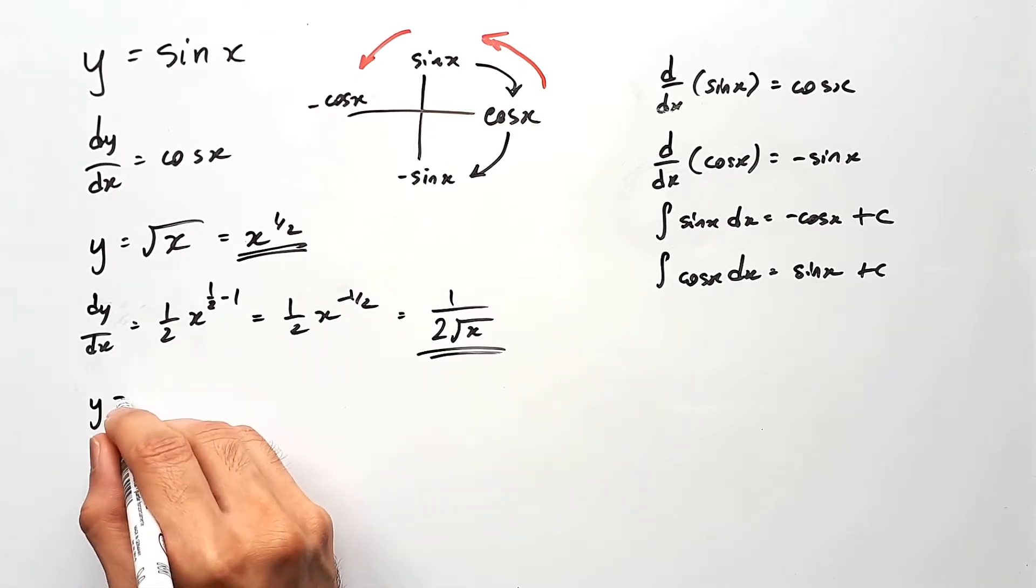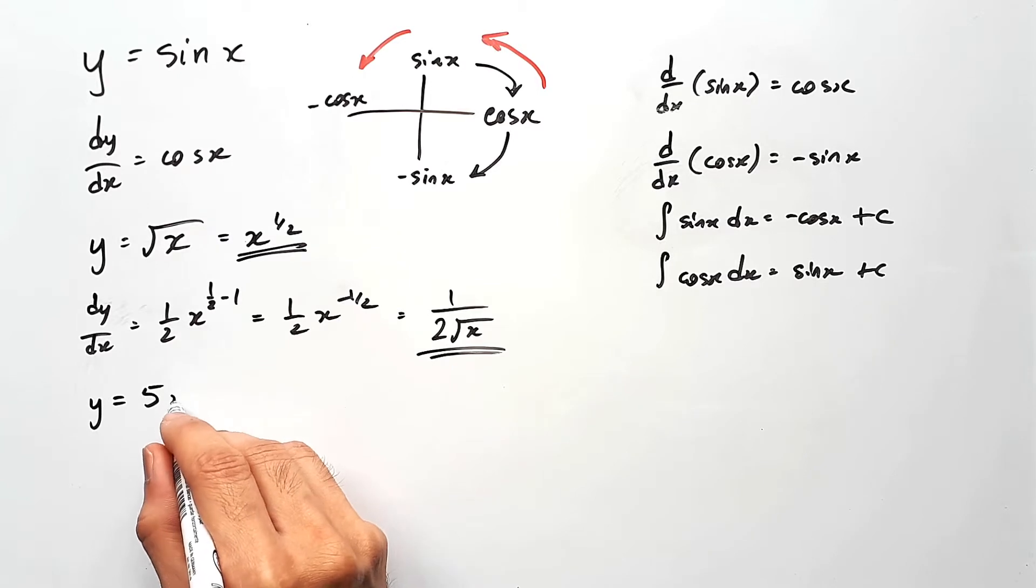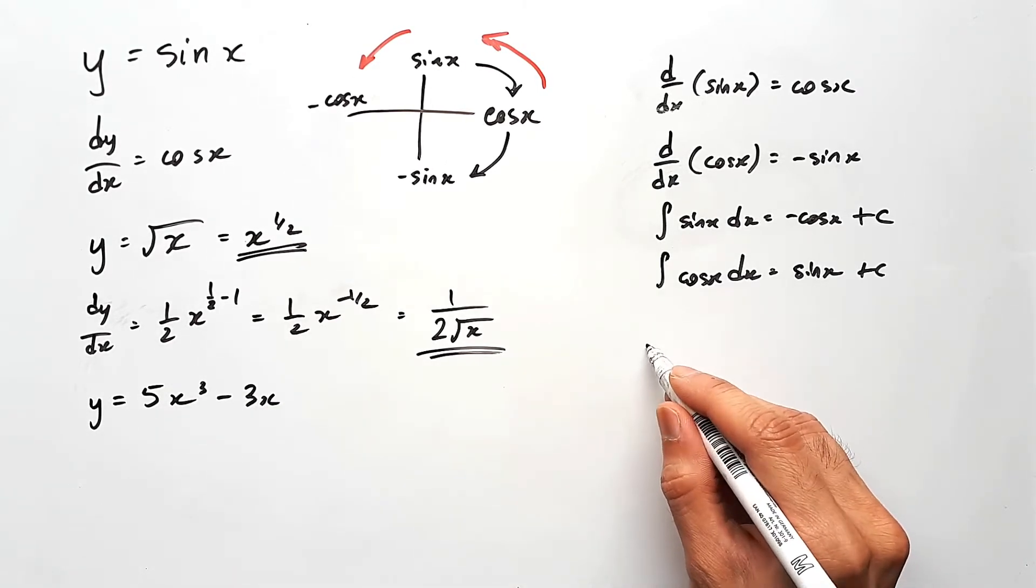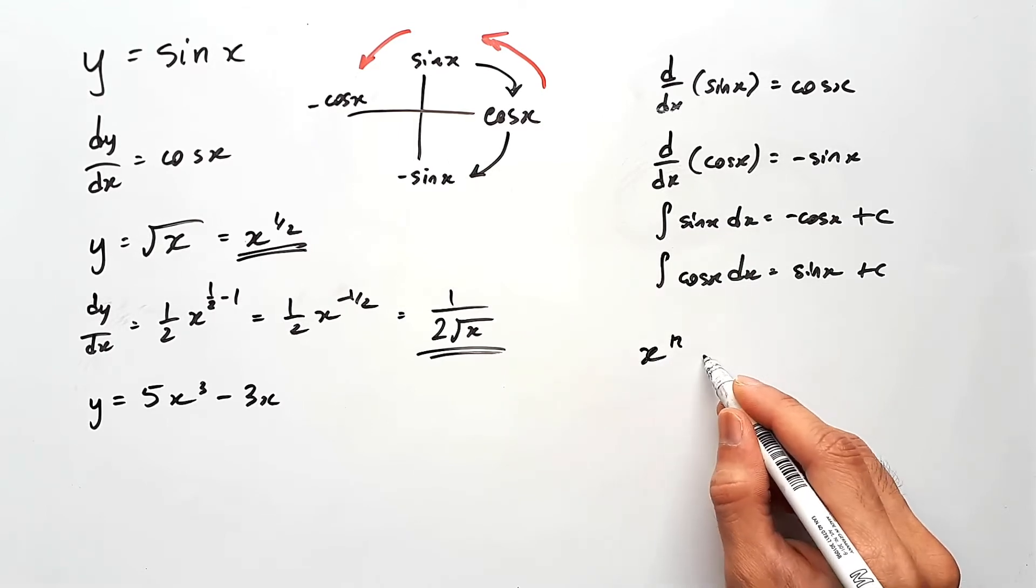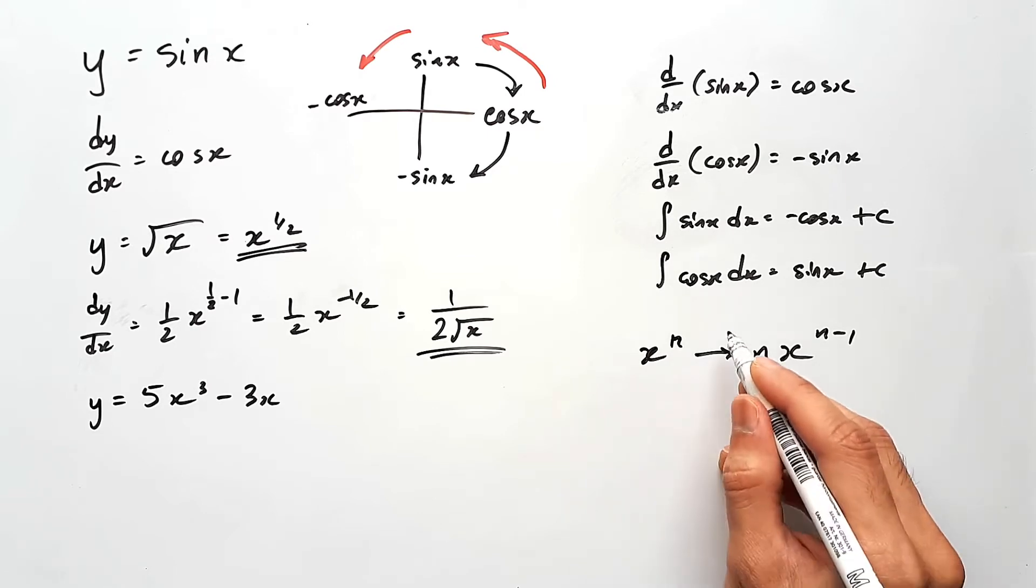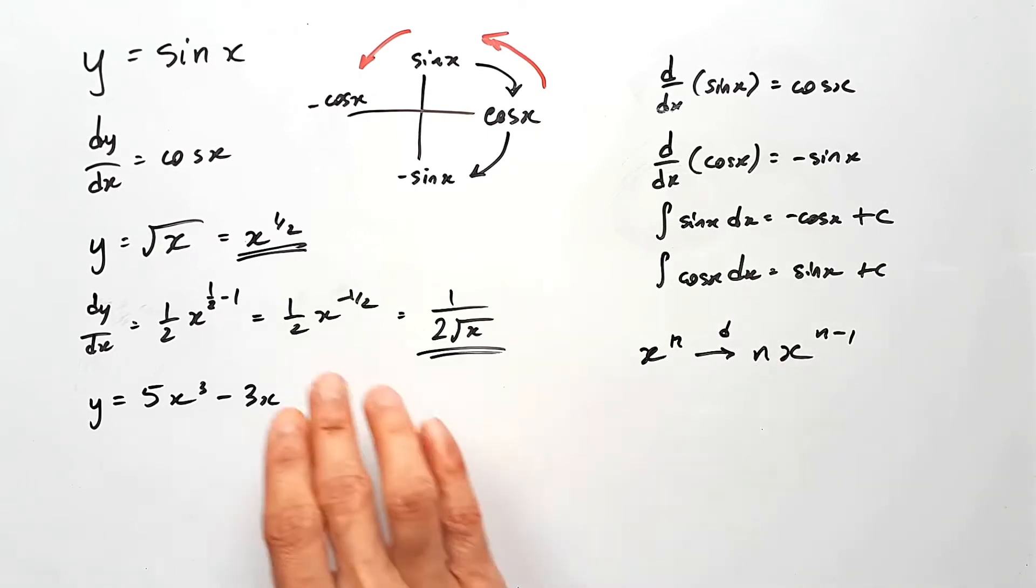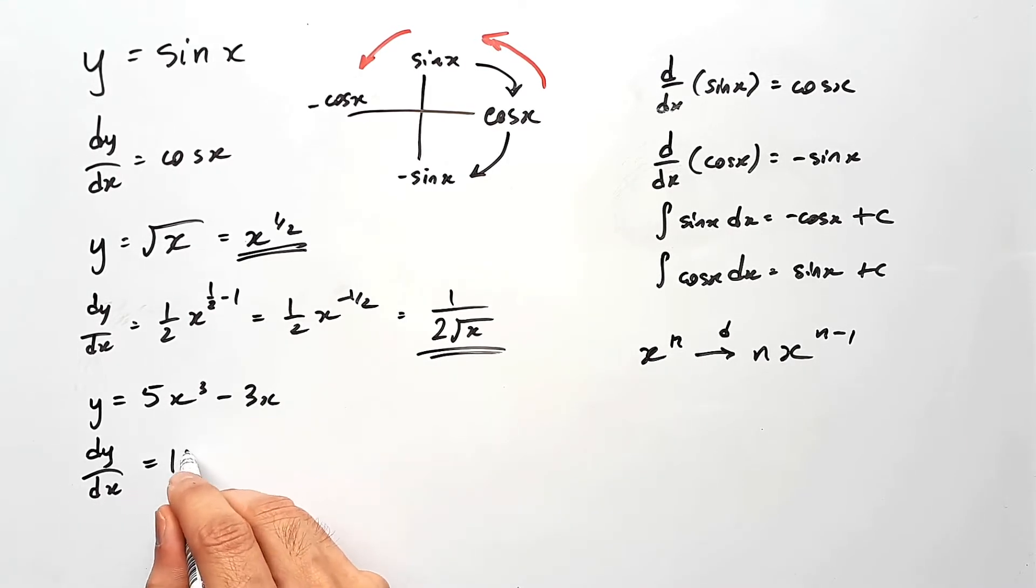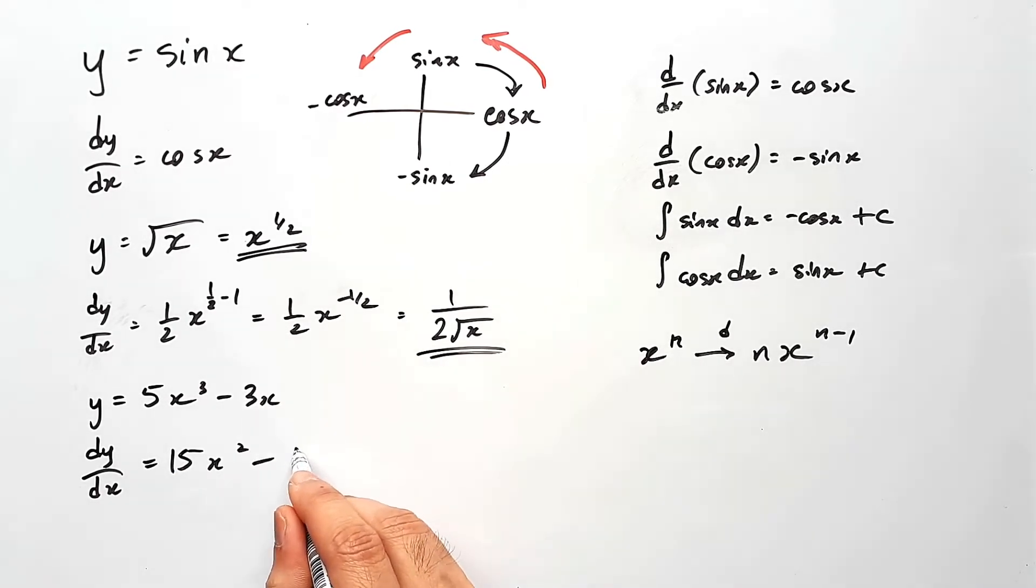And the last component to this is y equals 5x cubed minus 3x. This one's pretty straightforward. The derivative for any x to the power of n will just be n times x to the power of n minus 1. We differentiate it, just like we did with this question over here. And so dy on dx for this last component would be 15x squared minus 3.